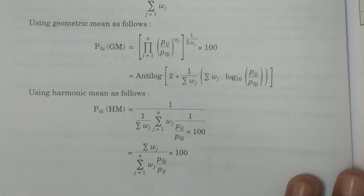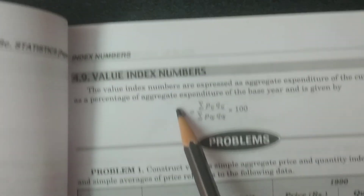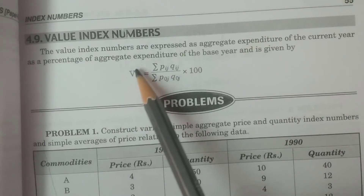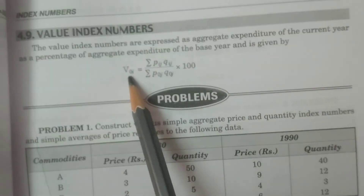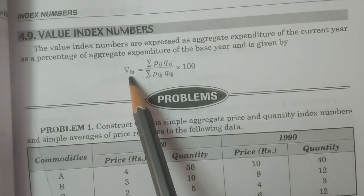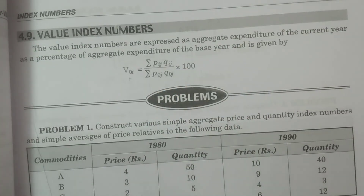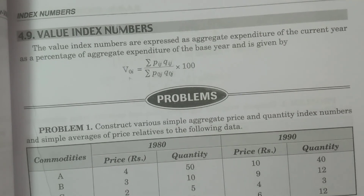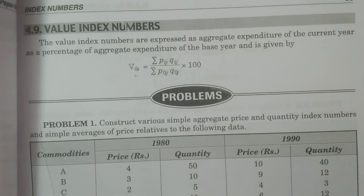One more formula — value index numbers. V0I = summation PIJ·QIJ divided by summation P0J·Q0J into 100. These are the various formulas. Hope you understand. Thank you.